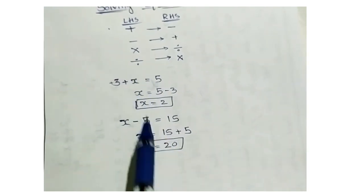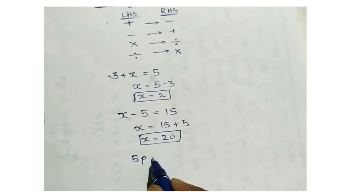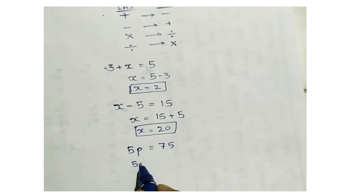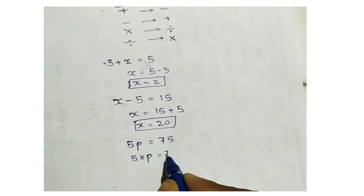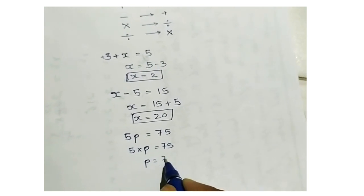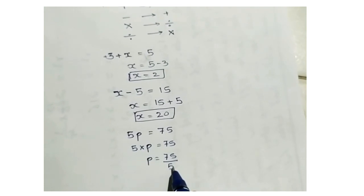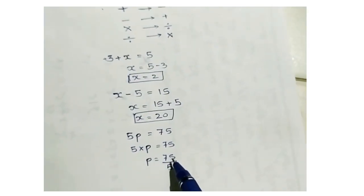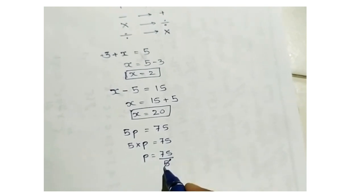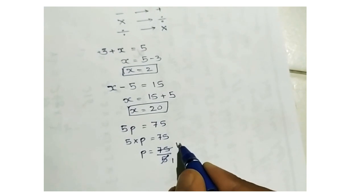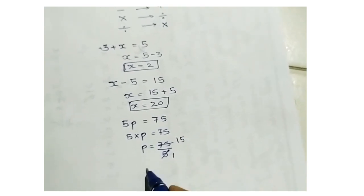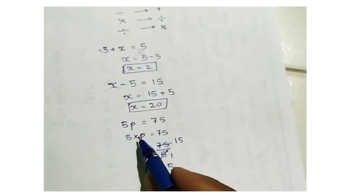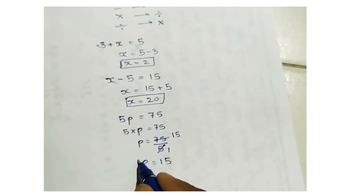Next example for multiplication: 5p equal to 75. 5p is nothing but 5 into p equal to 75. So p equal to 75 divided by 5, because multiplication becomes division when moved to the right side. If you divide 42 — 75 by 5 you cancel it: 3 ones are 3, remaining becomes 12, 3 fours are 12, so p equal to 50. So multiplication becomes division.